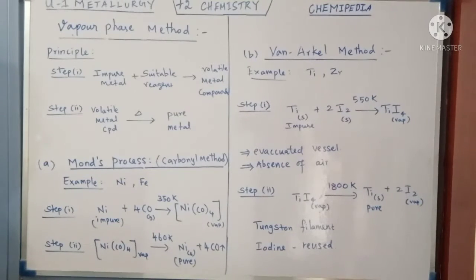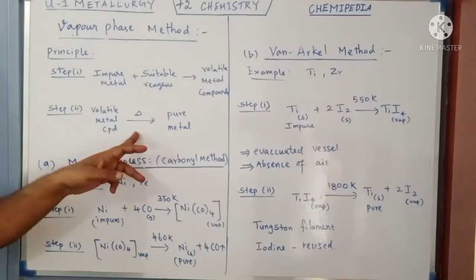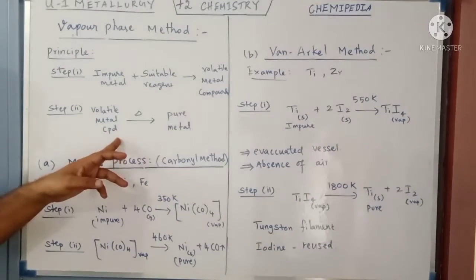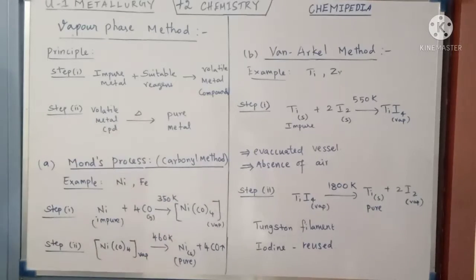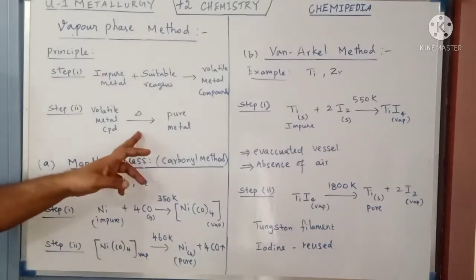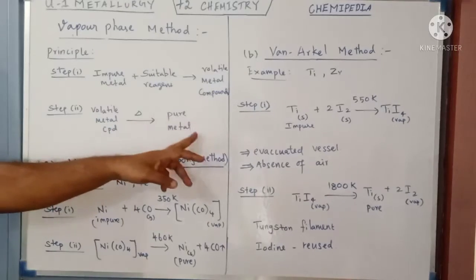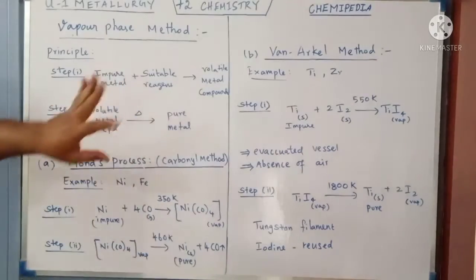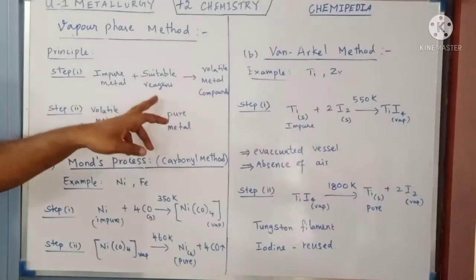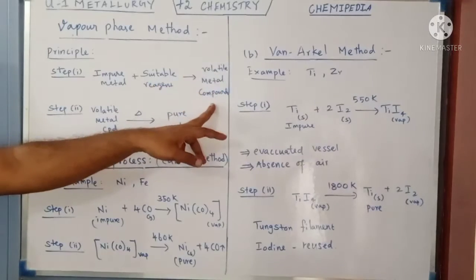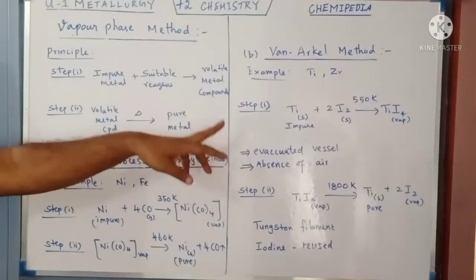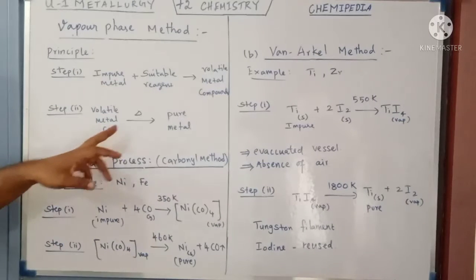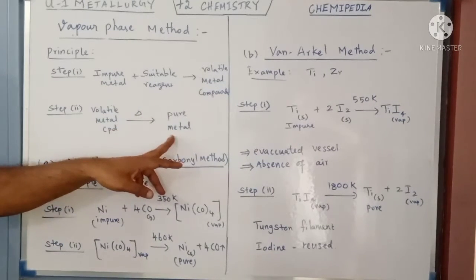The next step: the volatile metal compound is subjected to thermal decomposition — it is heated at a high temperature. As a result, it decomposes giving pure metal. So this is the basic principle: impure metal is treated with a suitable reagent to form a volatile metal compound; impurities remain non-volatile and are separated; then the volatile compound is thermally decomposed to give pure metal.